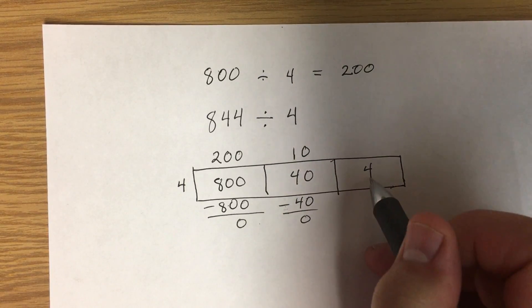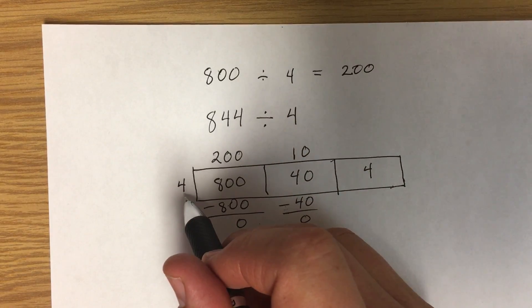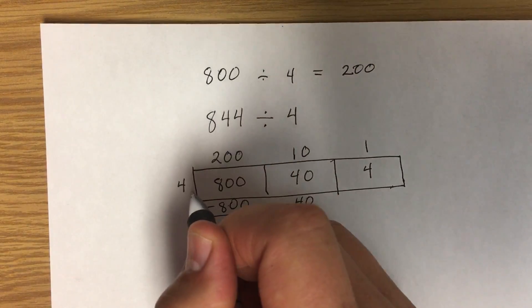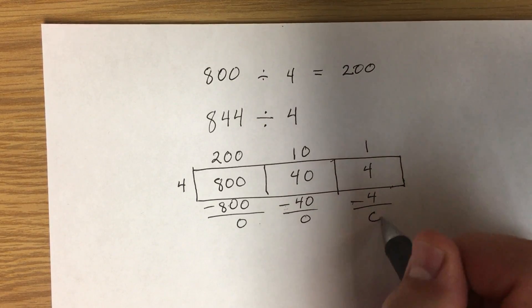So then I just move on to the 1's. How many 1's times 4 can fit into 4? Only 1. 1 times 4 can fit into 4. Subtract, and there's nothing left.